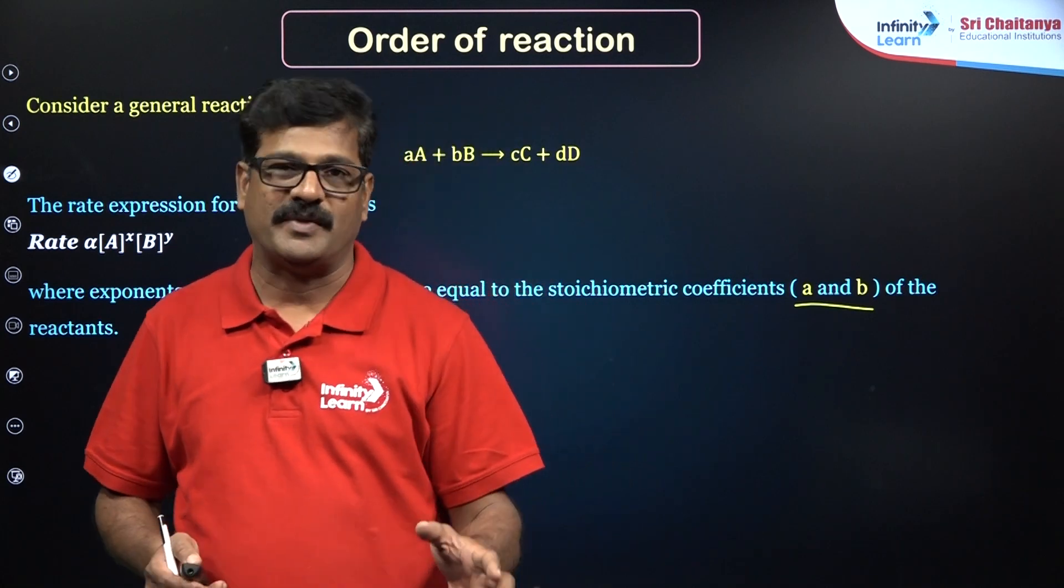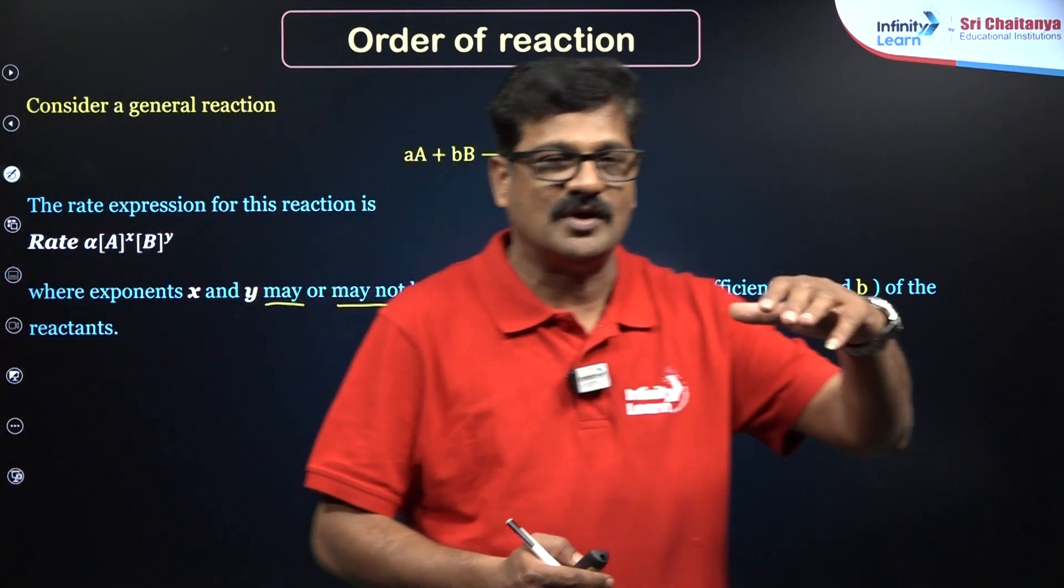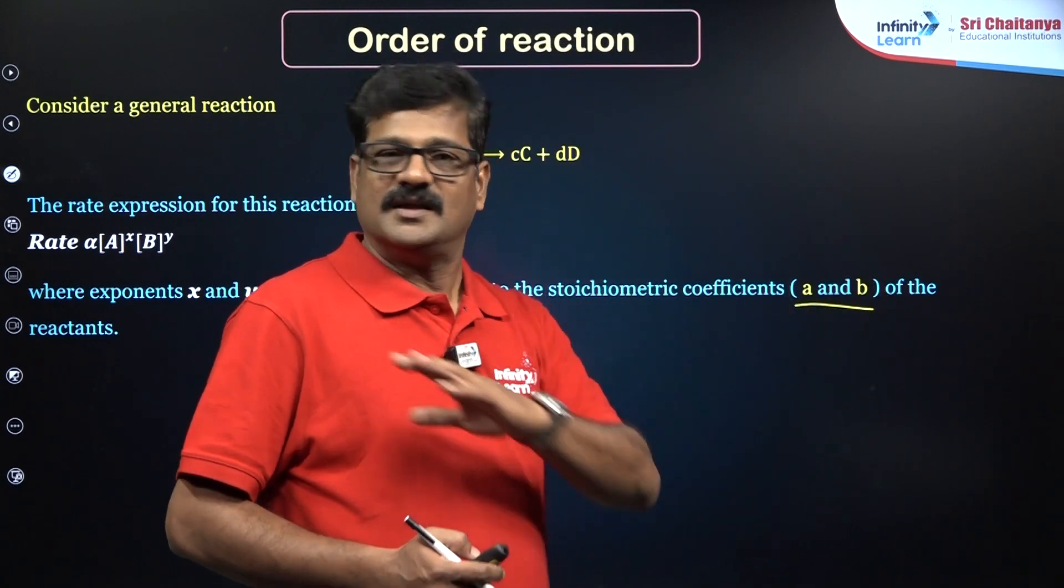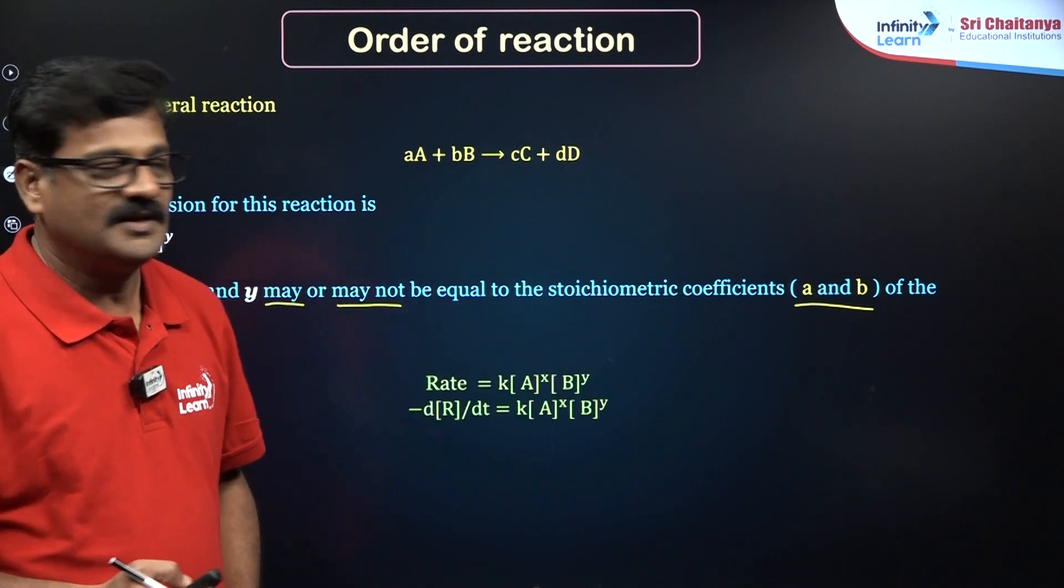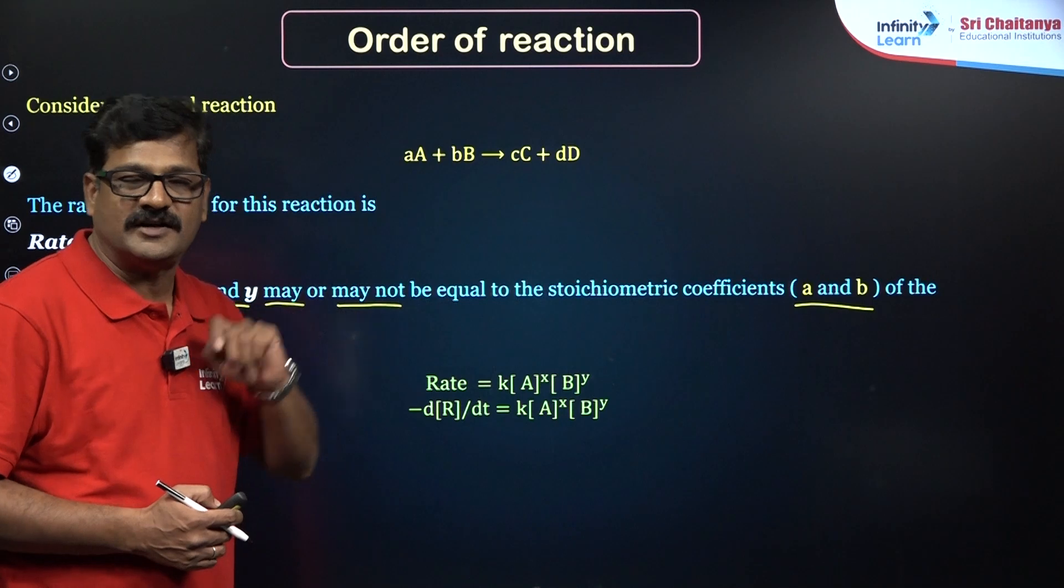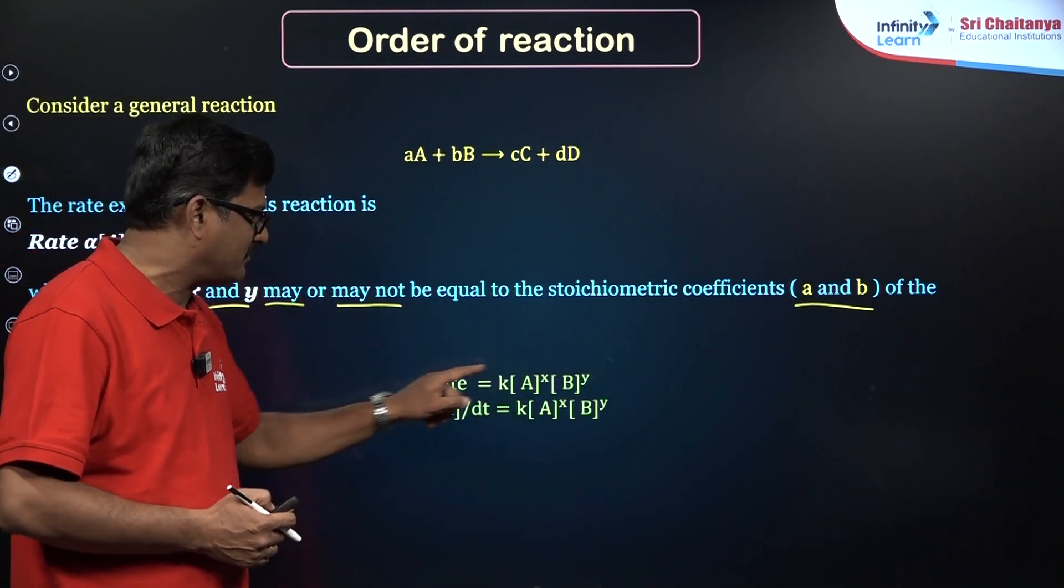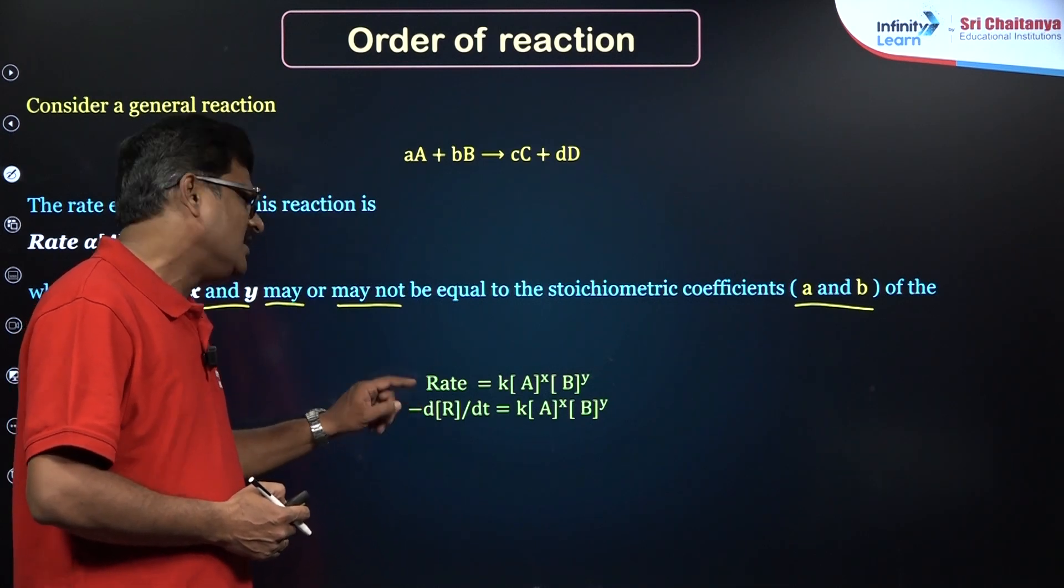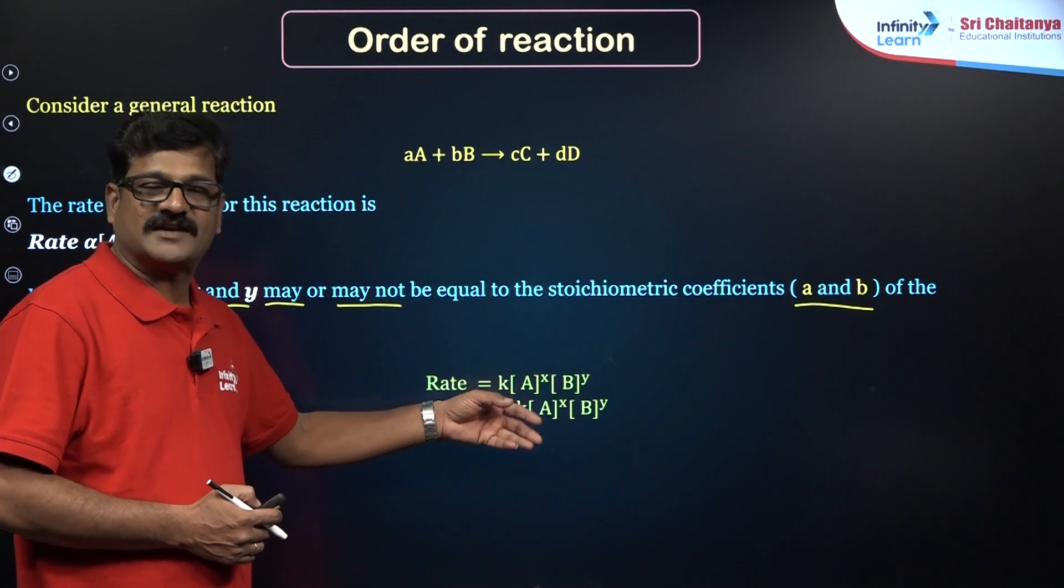That is the first mistake students make: by looking at the balanced chemical reaction, please do not write the rate expression or order of reaction. X and Y are experimentally determined. Based on that, rate = K[A]^X[B]^Y. This is called the rate law expression. K is called the specific rate constant, which is a measure of the speed of a reaction.